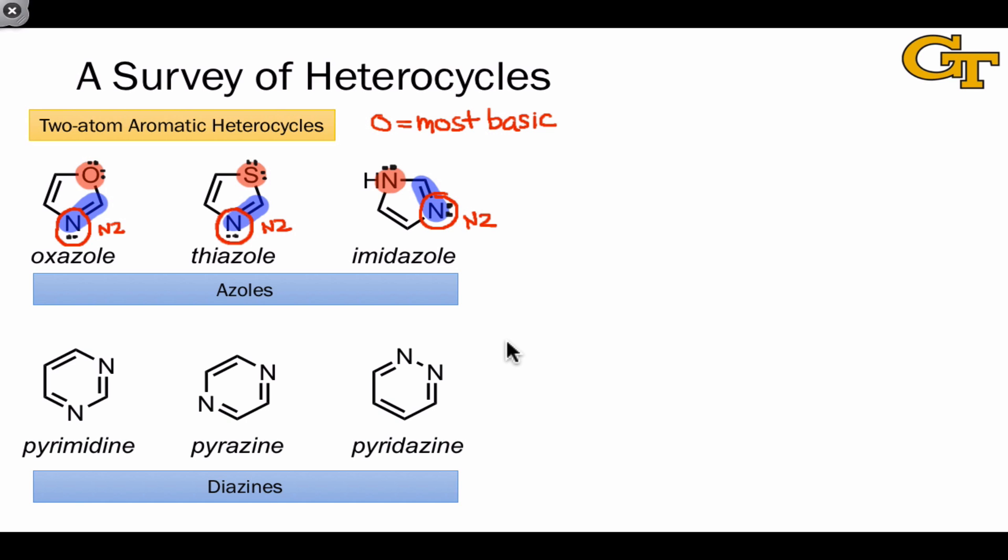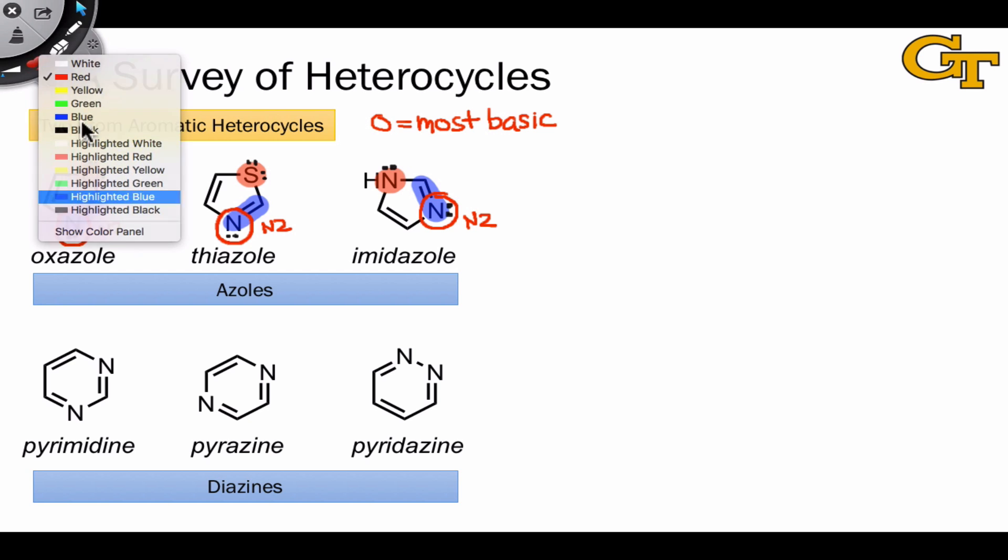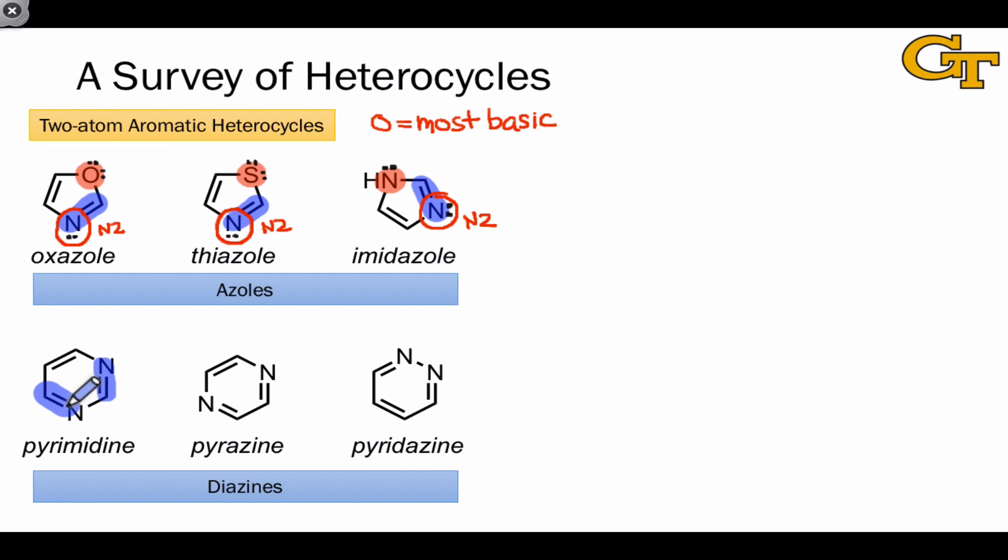The second important class of two-atom heterocycles is one that we've seen already, the diazines. Diazines contain two copies of the carbon-nitrogen double bond, and they differ in the positions of the nitrogen atoms. Pyrimidine has a meta-like relationship between the nitrogen atoms. Pyrazine has a para-like relationship between the nitrogen atoms. And pyridazine has an ortho-like relationship between the nitrogen atoms.